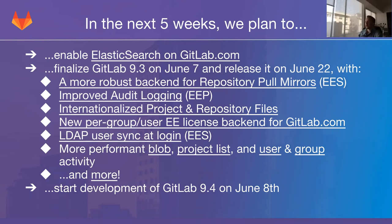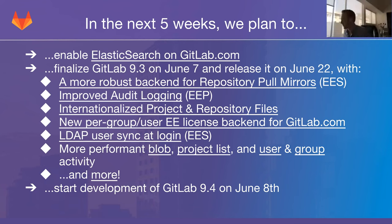The first thing 9.3 will bring is a more robust backend for repository pull mirrors. Currently, every hour every mirror repository tries to update itself, causing huge memory and CPU spikes. With a near-complete rewrite of this backend, updates will be spread out more sensibly over time. Users will notice that GitLab no longer has a spike of activity every hour that slows down web requests — that will be a thing of the past with GitLab 9.3.